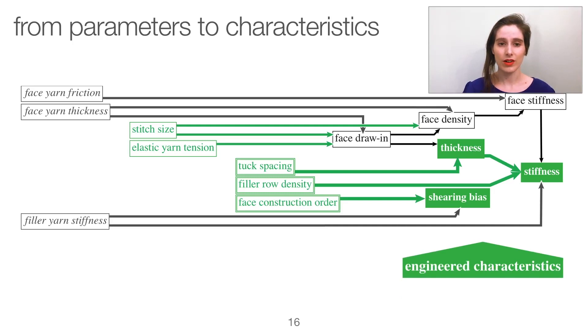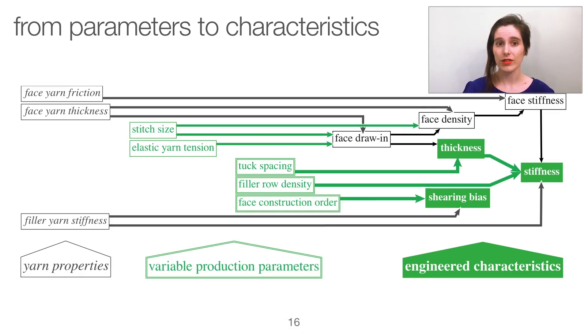Altogether, thickness and stiffness are two of the characteristics we track in this paper, as well as the shearing bias, which you saw in the linkage example before. These characteristics ultimately arise out of both material properties, such as friction, stiffness and thickness of the yarns, as well as construction parameters, such as the ratio of filler material to face material. As such, a spacer fabric is an engineered metamaterial, which emerges from both the material and structural properties.